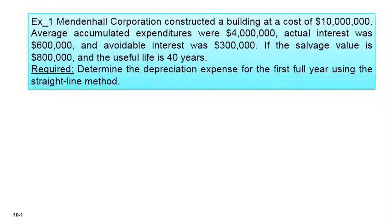Let's see some exercises and see how we can deal with them. The first exercise requires us to determine the depreciation expense for the first full year using the straight-line method. The straight-line method says cost minus salvage value over useful life. A corporation constructed a building at a cost of 10 million, average accumulated expenditure 4 million, actual interest 600 thousand, avoidable interest 300 thousand, salvage value 800 thousand, and useful life 40 years.